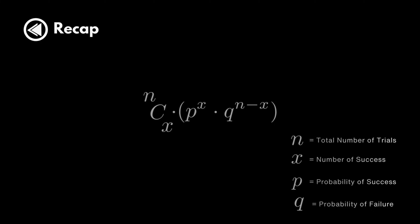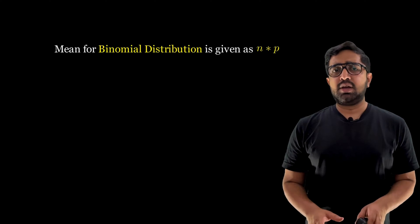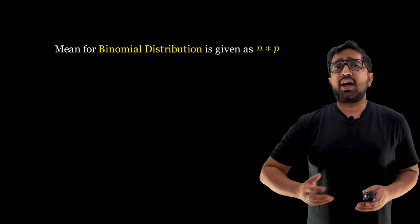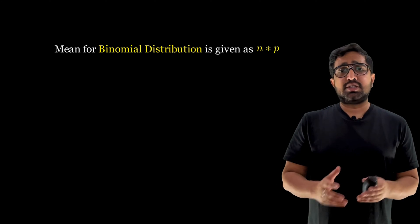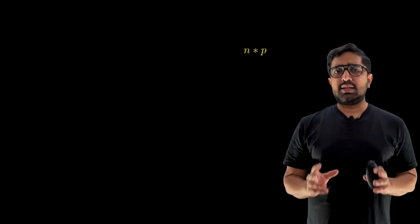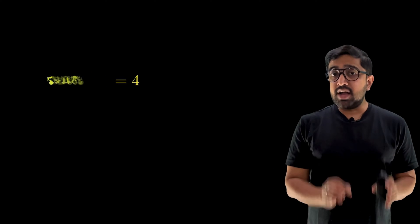We have completed the probability mass function of binomial distribution. Now let's look at the mean of the binomial distribution. We all know the mean is given as n·p. For our example, to find on average how many patients survive out of five trials, we do n·p = 5 × 0.8 = 4. This is the average number of people surviving when we test this medicine on five patients.